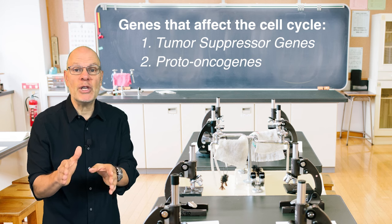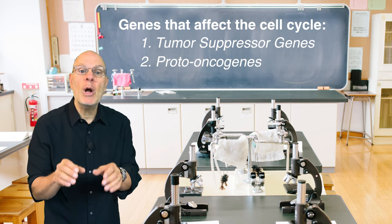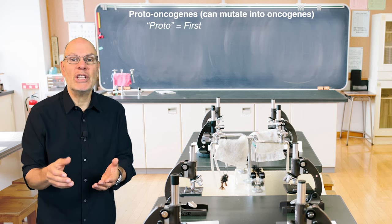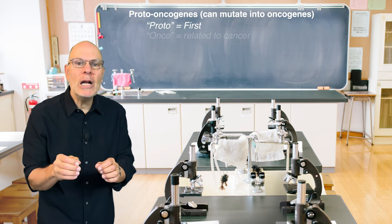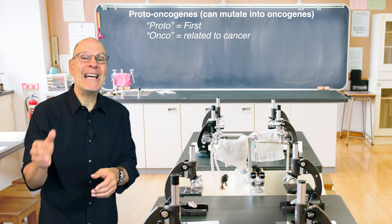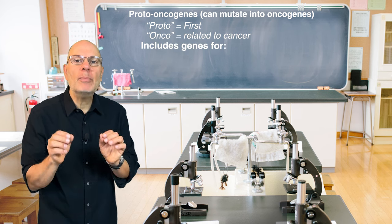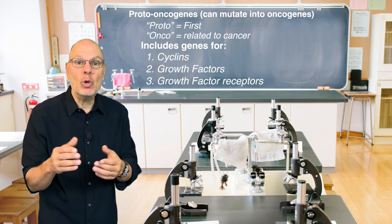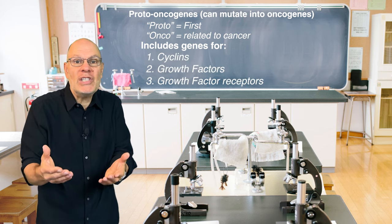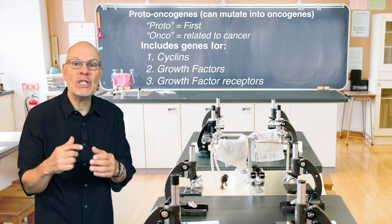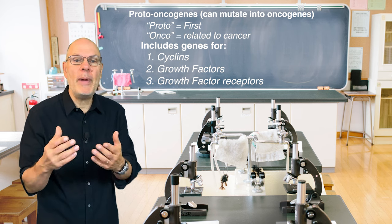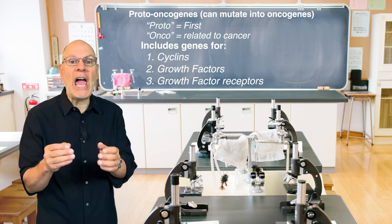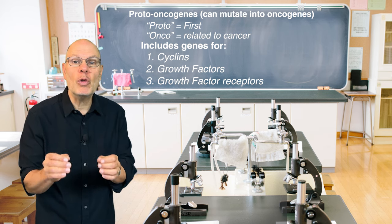The term tumor suppressor is self-explanatory, but let's look at the term proto-oncogene in more detail. Proto means first, like the prototype of a car. Onco means related to cancer — an oncologist treats cancer. But proto-oncogenes in and of themselves aren't bad; we need them in order for cells to divide. Examples of proteins produced by proto-oncogenes are cyclins, growth factors, or growth factor receptors.